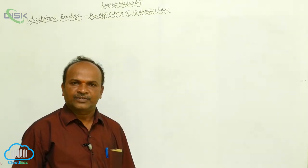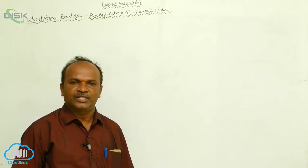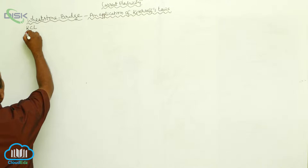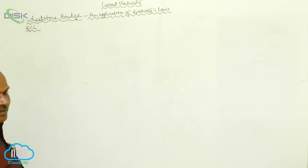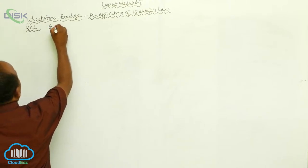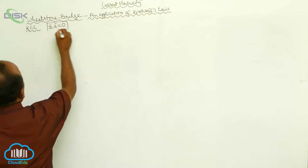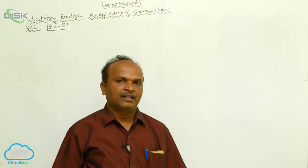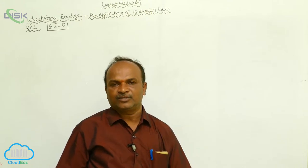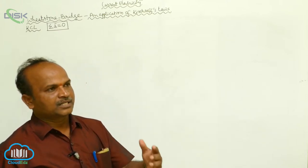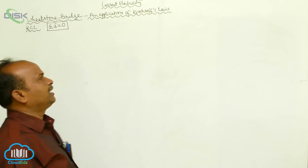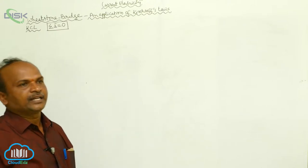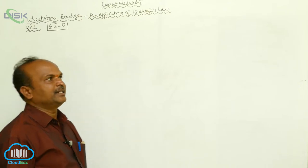Kirchhoff's first law is known as the law of currents, and Kirchhoff's second law is known as the law of voltages. The statement of Kirchhoff's current law (KCL) is: the algebraic sum of currents at a junction is equal to zero. The sign convention is that currents towards the junction are taken as positive, and currents away from the junction are taken as negative.